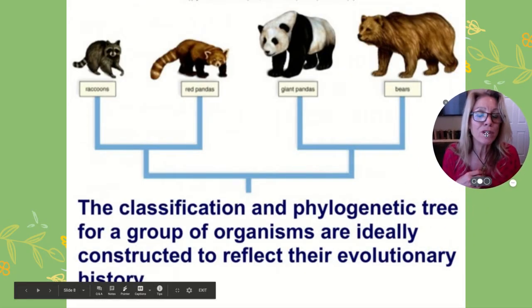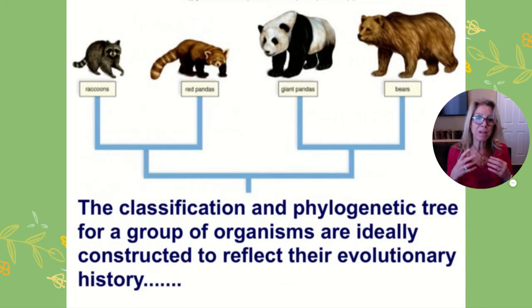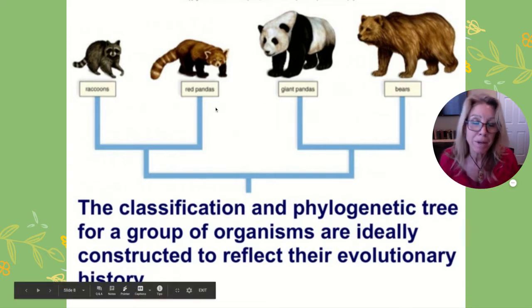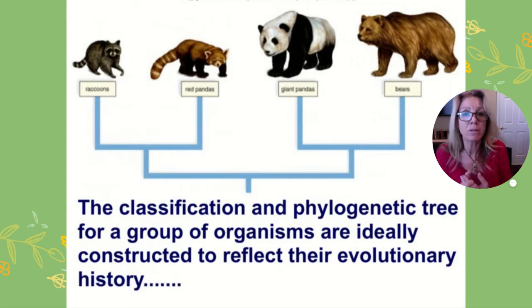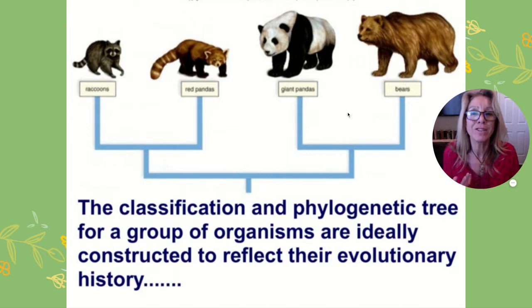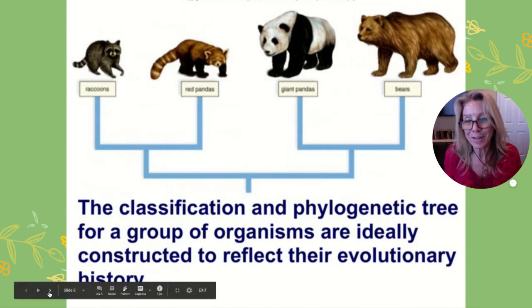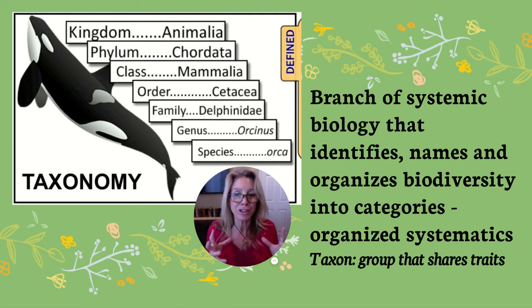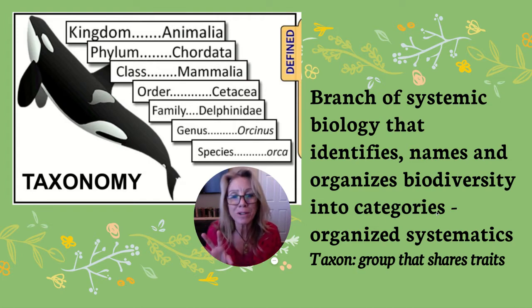That process hopefully reflects not just appearances, but we want to look at things like DNA to help construct their phylogeny. For instance, here's a giant panda and a red panda. Most people would think they must be closely related — but the giant panda actually shares an ancestor with bears, and that shares an ancestor with the raccoon and the red panda. So the red panda is actually more closely related to a raccoon than a giant panda. When you study taxonomy, this is a branch of systematic biology where you're looking at organization to show phylogeny — trying to identify, name, and organize all the biodiversity into categories.